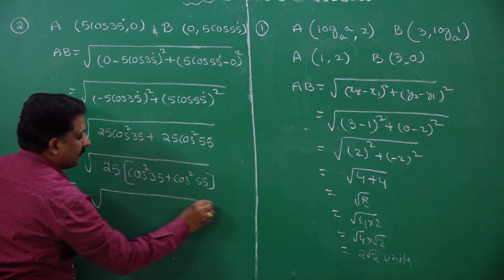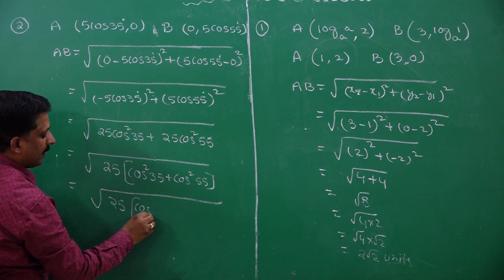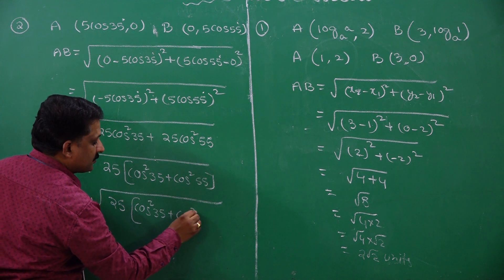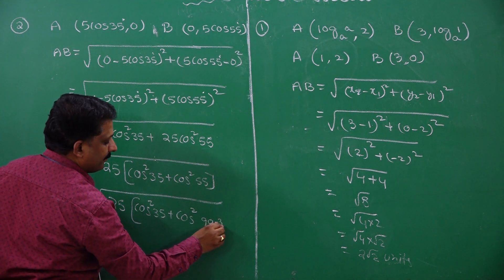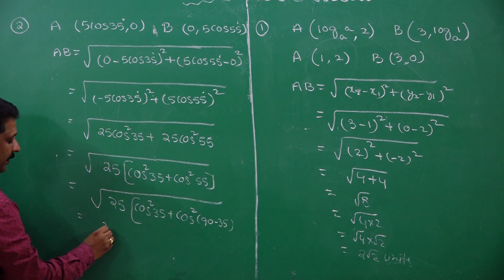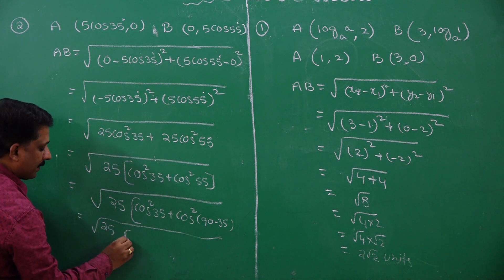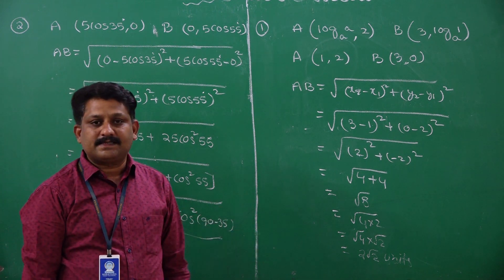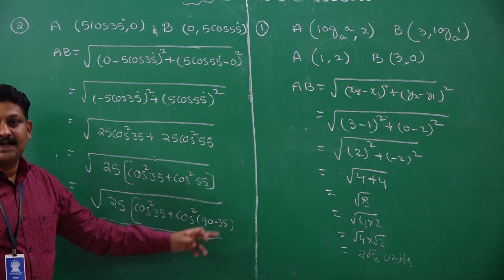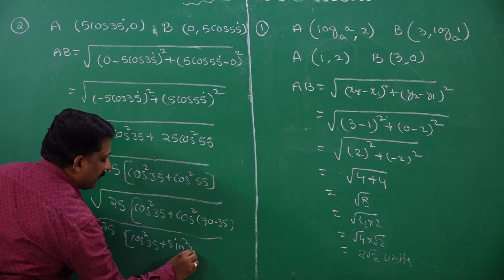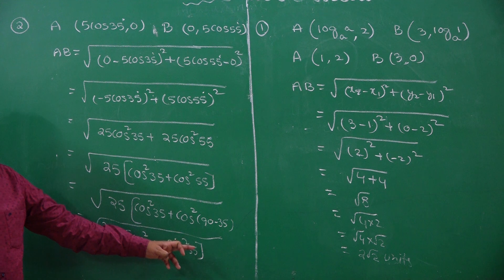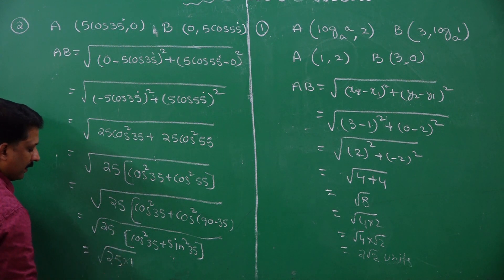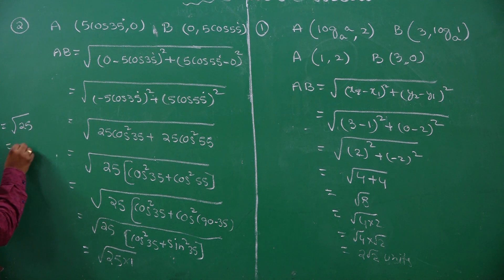Now, cos squared 55 can be written as cos squared (90 minus 35). Since cos(90 minus theta) equals sin theta, I can write cos squared (90 minus 35) as sin squared 35. We have the identity cos squared 35 plus sin squared 35 equals 1. So the expression becomes root of 25 times 1, which is root 25, and the answer is 5.